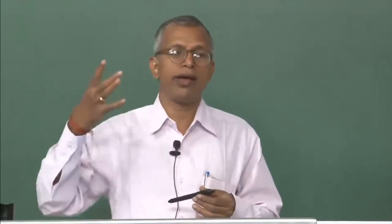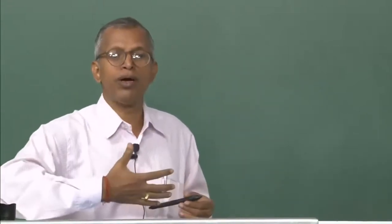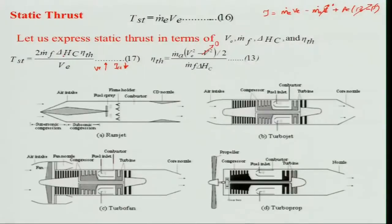For example, in a cargo or military scenario where you need to carry heavy ammunition, you need a higher static thrust and high propulsive efficiency — so you go for a turbo-prop engine. The exit velocity from a turbo-prop engine is much lower compared to a turbo-jet engine. For turbo-jet, the higher exit velocity means lower static thrust, so it cannot carry very heavy loads.